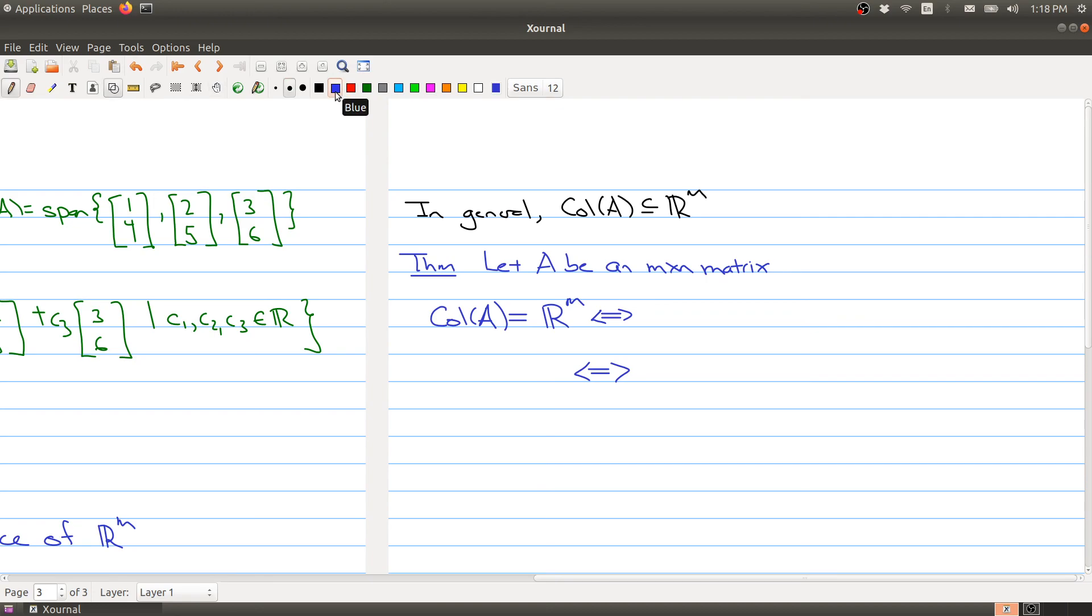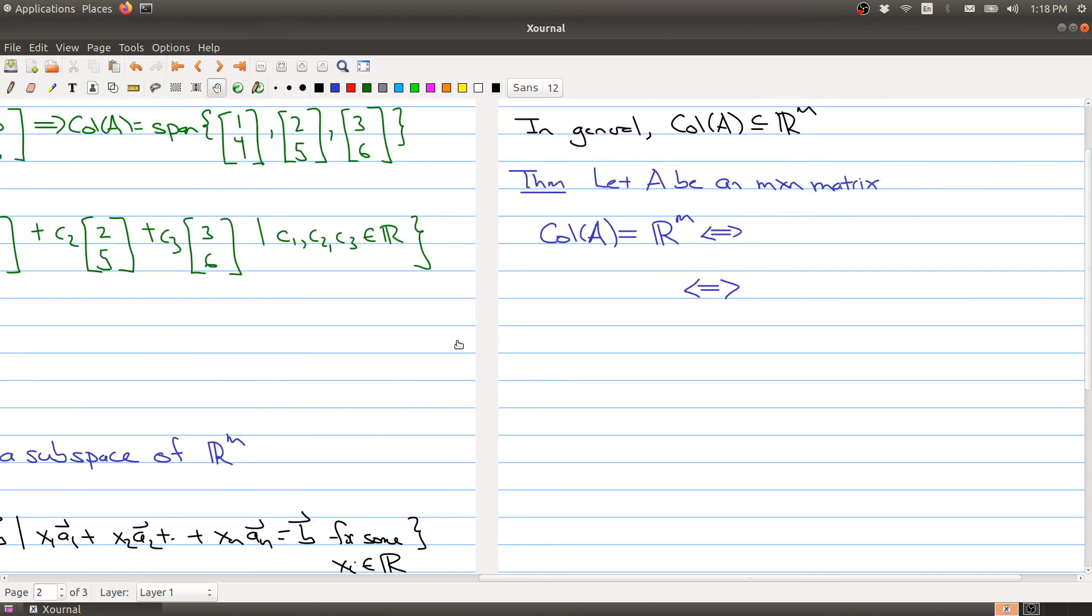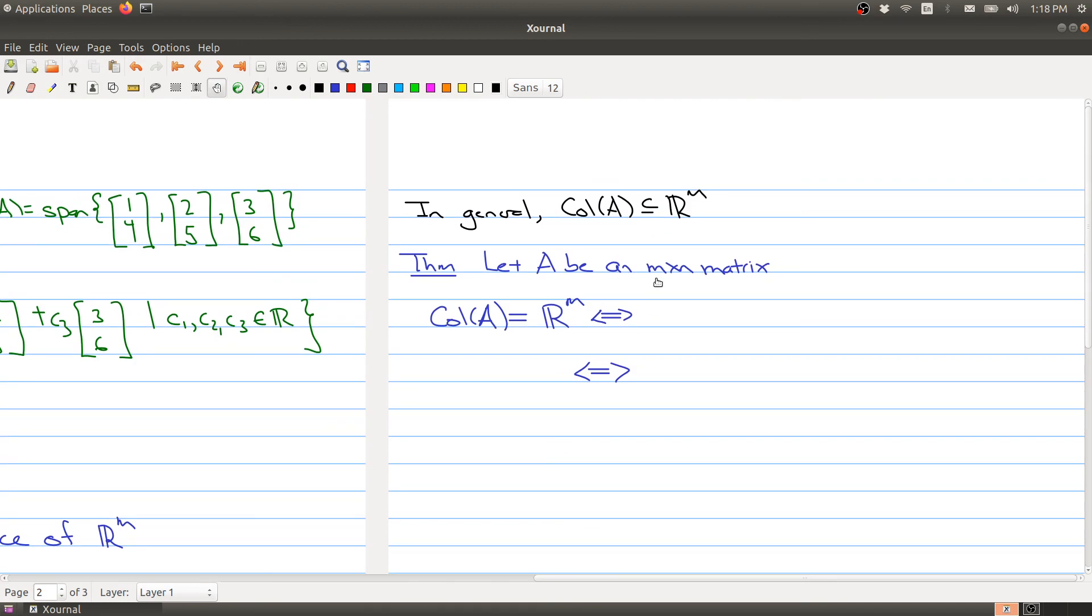Well, if we think about what our last little interpretation of the column space was, namely down in here, what we have, what we have is that the column space is equal to R M if and only if AX equals B has a solution for all B in R M. Now this is something we've actually seen before, the statements of this type. What does it mean for this equation to have a solution for any B in R M?